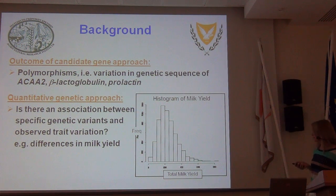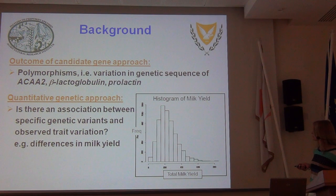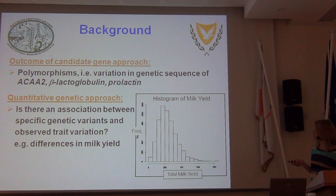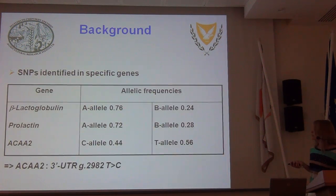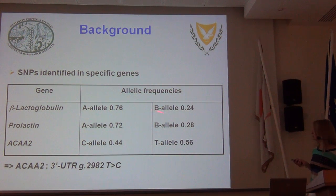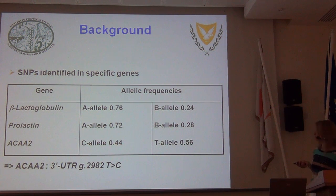For example, for milk yield, if we look at how it varies among the ewes in our flock, we see great differences — this continuous variation, the bell-shaped distribution with the tail at the end. We want to know if the variants that were detected associate with this difference in milk yield. The three SNPs, the three genes in which we identified single nucleotide polymorphisms — the allelic frequencies of the different variants are shown here. As you can see, the minor allele in those genes is quite significant in frequency.